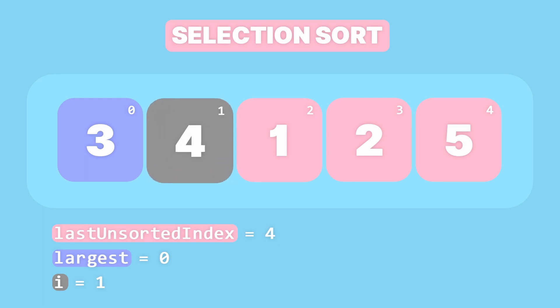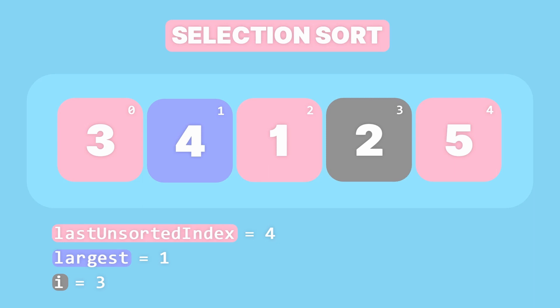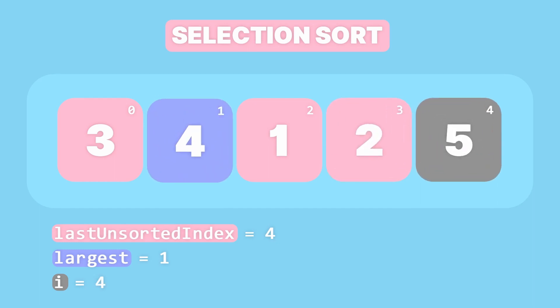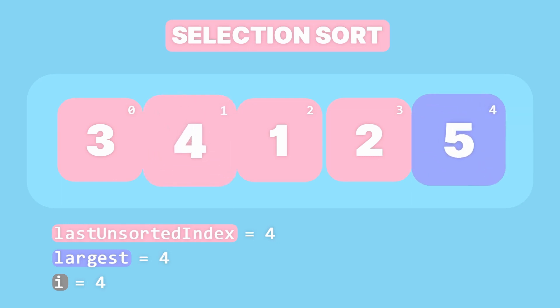We begin by comparing the element at index 1 to the largest element at index 0. Since 4 is larger than 3, we change largest to 1. Next we increment i to 2 and compare the element at index 2 to the largest element at index 1. And 1 is not greater than 4, so we increment i to 3. We compare the element at index 3 to the largest element at index 1, and 2 is not greater than 4, so we increment i to 4. Then we compare the element at index 4 to the largest element at index 1, and 5 is greater than 4, so we change largest to 4. At this point i is equal to the last unsorted index, which means we completed our first traversal and found the largest element in the unsorted partition at index 4.